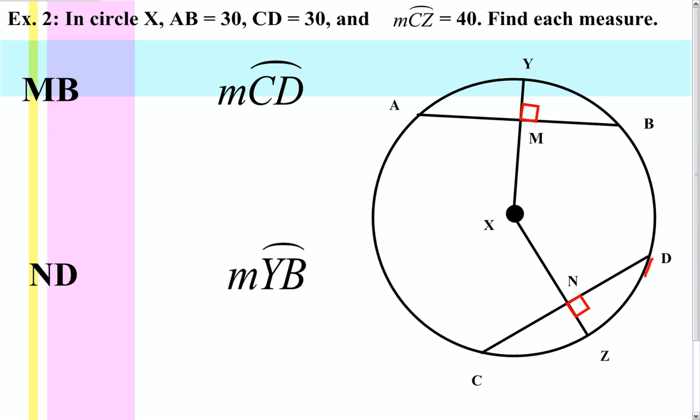Now in this circle, chord AB is 30, chord CD is also 30, and the arc from C to D measures 40.